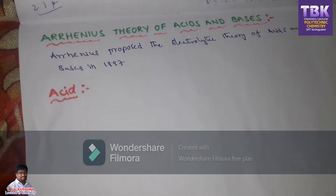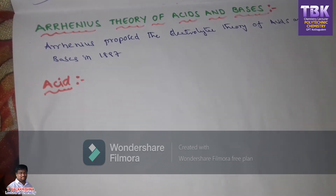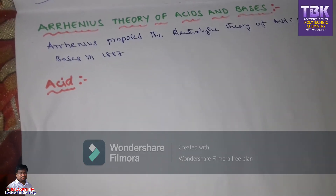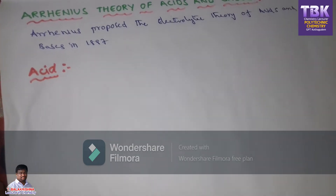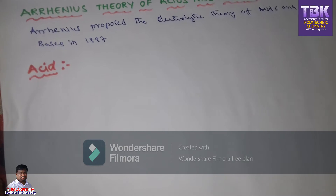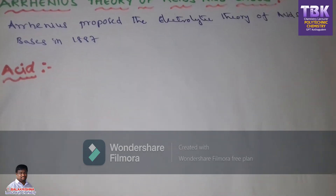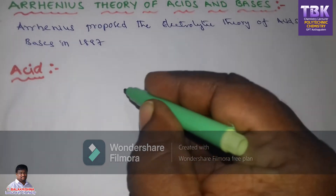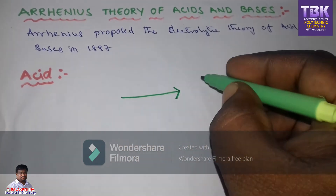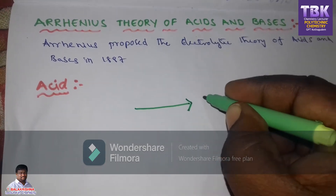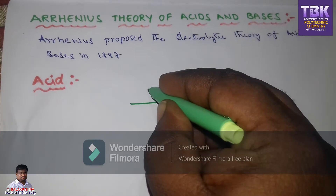According to this theory, an acid is defined as a chemical substance that contains hydrogen and ionizes in aqueous solution to give hydrogen ions. The chemical substance which produces or gives H+ ions in aqueous solution is called an acid.